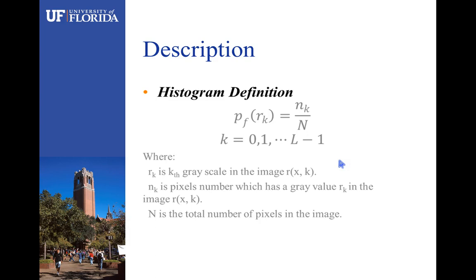nk is the number of pixels which has a gray value rk in the image. n is the total number of pixels.